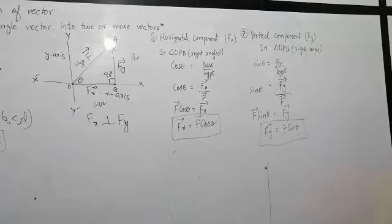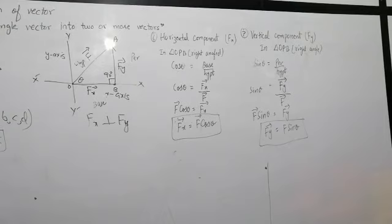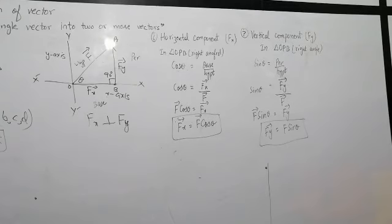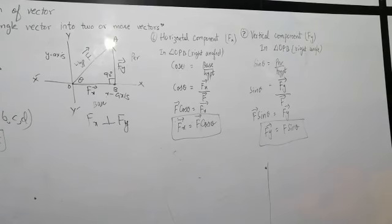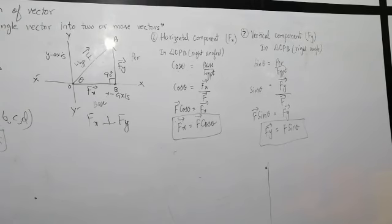We have covered 7 items: first, the definition of resolution; second, an example where a vector is split into B, C, and D; third, the definition of component; fourth, in our example B, C, and D are components; fifth, rectangular component which is perpendicular; sixth, the explanation with fx and fy being perpendicular giving rectangular components with equation fx = F cos theta; seventh, vertical component definition and equation fy = F sin theta.